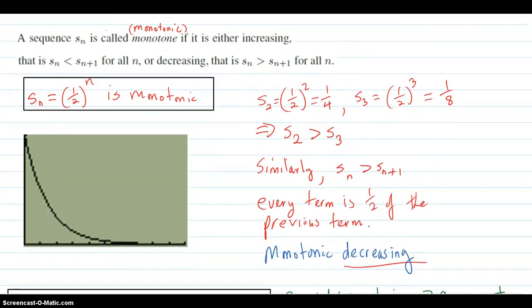But if we add in monotone or monotonic, then we do get some results. So a sequence is called monotone or monotonic if it is either increasing, which means that the next term is always larger than the previous, for all n.